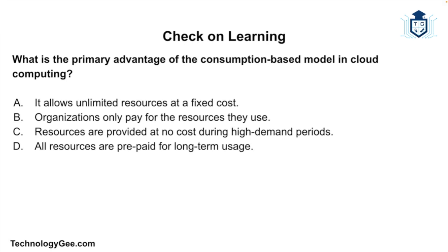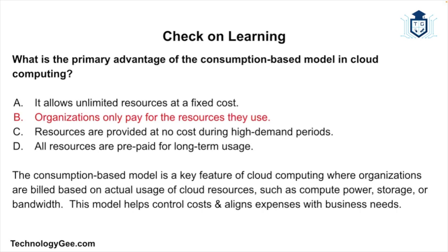Check on learning: What is the primary advantage of the consumption-based model in cloud computing? The options are: it allows unlimited resources at a fixed cost; organizations only pay for the resources they use; resources are provided at no cost during high demand periods; or all resources are prepaid for long-term usage. The correct answer is: organizations only pay for the resources they use. The consumption-based model is a key feature of cloud computing where organizations are billed based on actual usage of cloud resources such as compute power, storage, or bandwidth, helping control costs and align expenses with business needs.